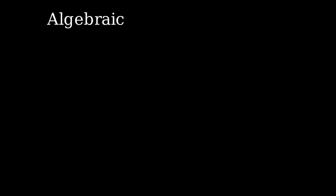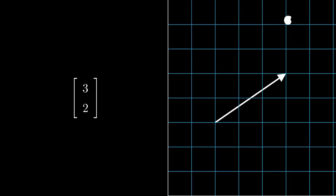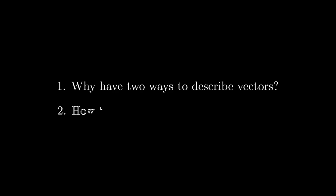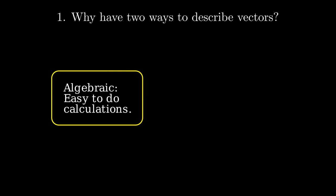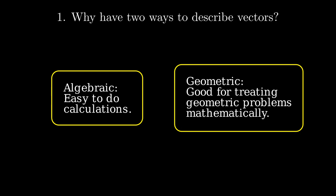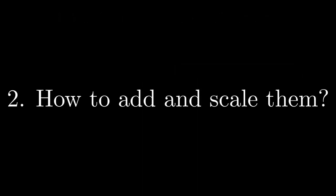Two-dimensional vectors can be described in two different ways. First, the algebraic way, using ordered pairs of real numbers arranged in a column, and secondly, the geometric way, where vectors are described as arrows in the plane. At this point it's not really clear what we're doing, and there are some questions that need answering. Firstly, why do we even have two different ways to describe two-dimensional vectors? And secondly, how can we add and scale columns and arrows? If we begin with the first question, the answer has a lot to do with what we actually use vectors for in practice. As we'll see, doing calculations with vectors described algebraically is pretty easy, and using the geometric description of vectors gives us an elegant way to treat many problems which can be stated geometrically using vectors.